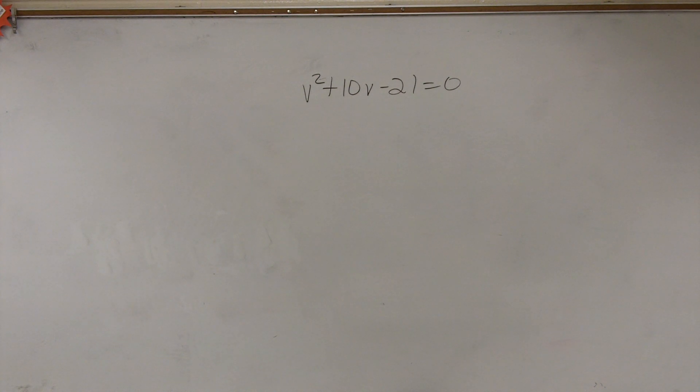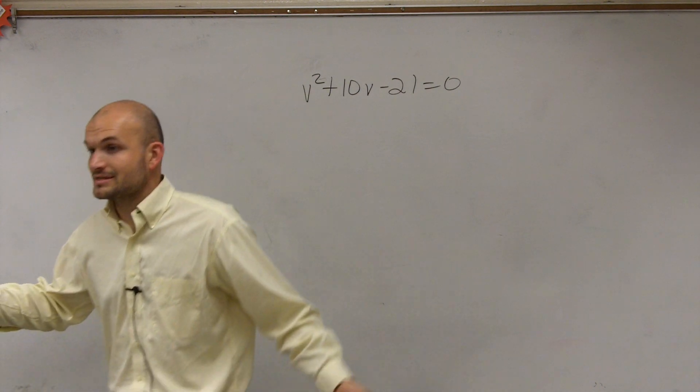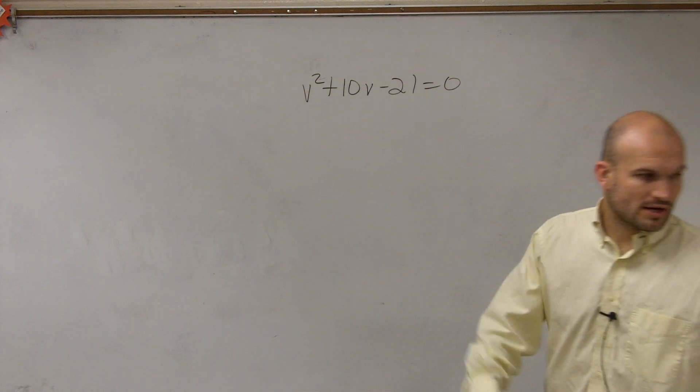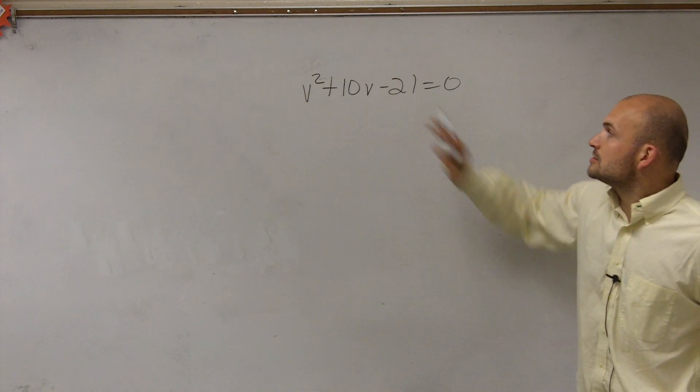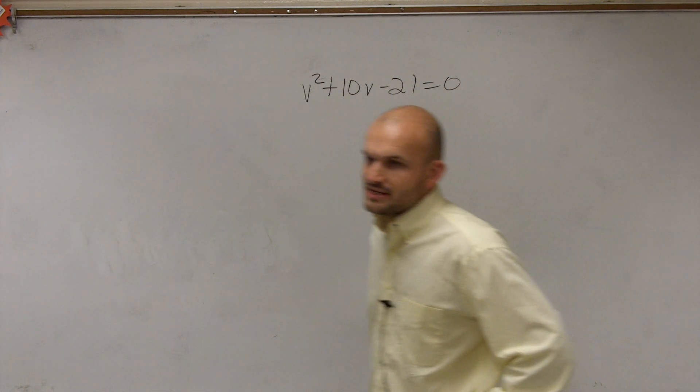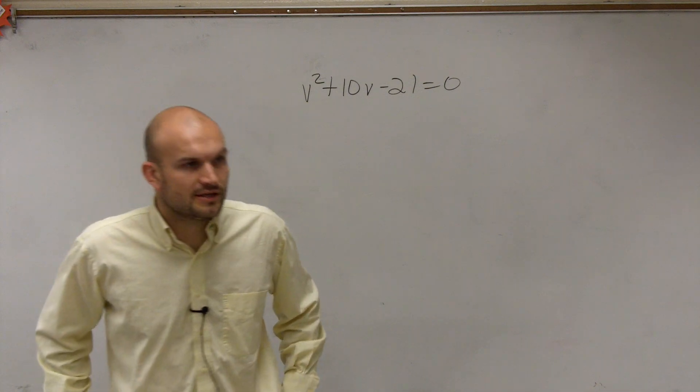All right. I don't know, maybe every single time I look at you, you're not looking up, but let's just go through. This is number one, so you can write this down for this one. So what we have is v² + 10v - 21 = 0, all right? And what I'm asking you guys to do is to solve by completing the square.